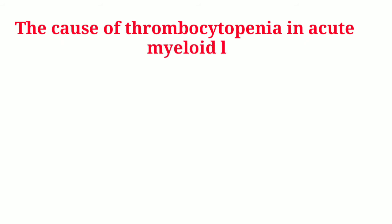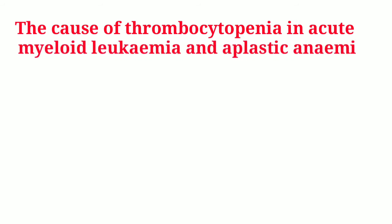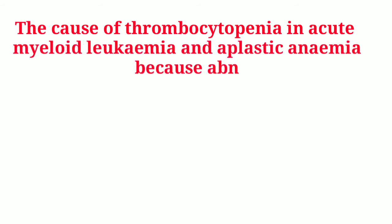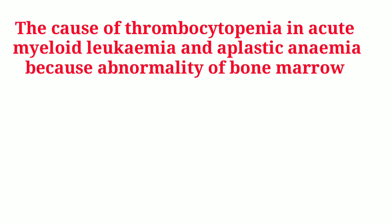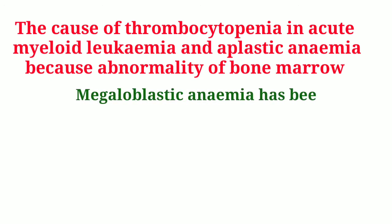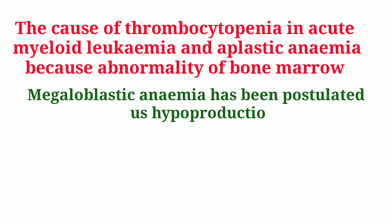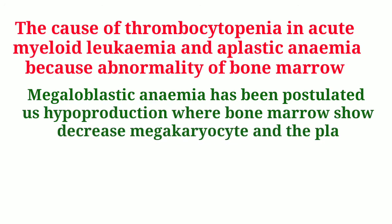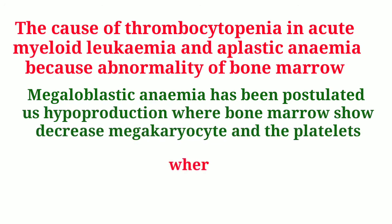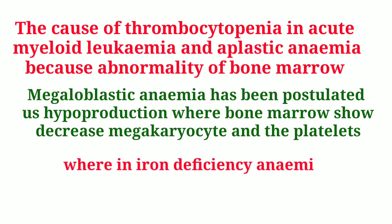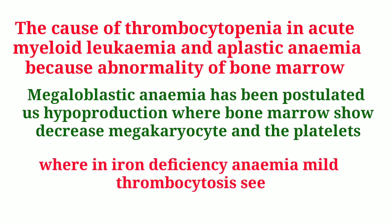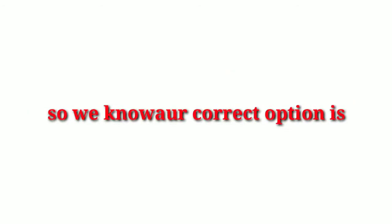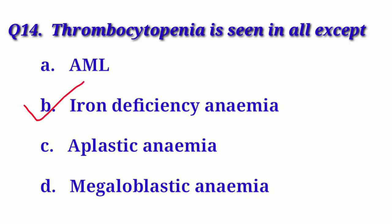The cause of thrombocytopenia in acute myeloid leukemia (AML) and aplastic anemia is abnormality of bone marrow, and megaloblastic anemia has been postulated as hypoproduction when bone marrow shows decrease in production. So our correct option is Option B: Iron deficiency anemia.